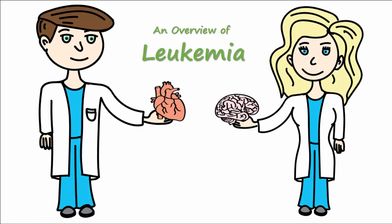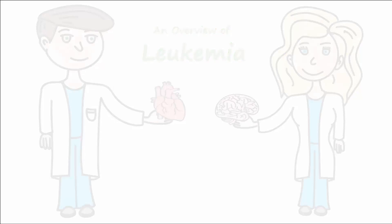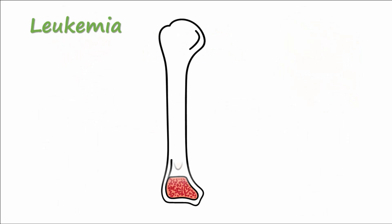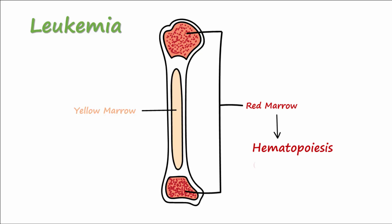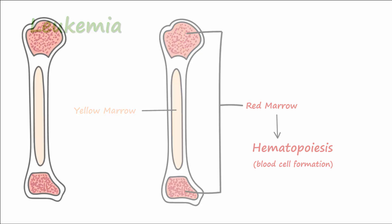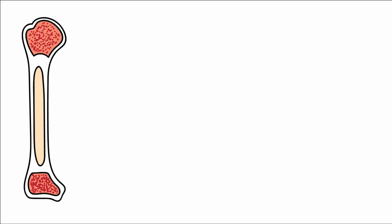Let's talk about leukemia. Leukemia is a cancer that develops in the red marrow of bones. Remember that red bone marrow is a specialized tissue where the process of hematopoiesis, or blood cell formation, occurs.